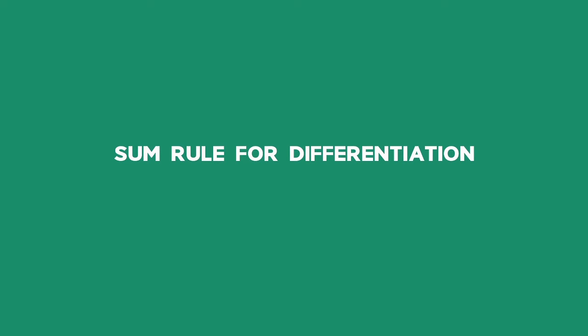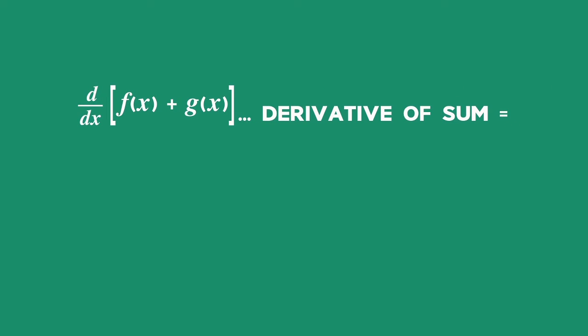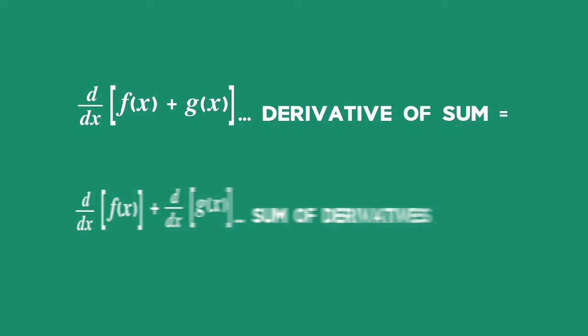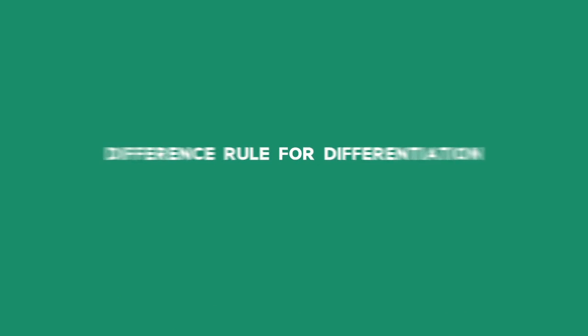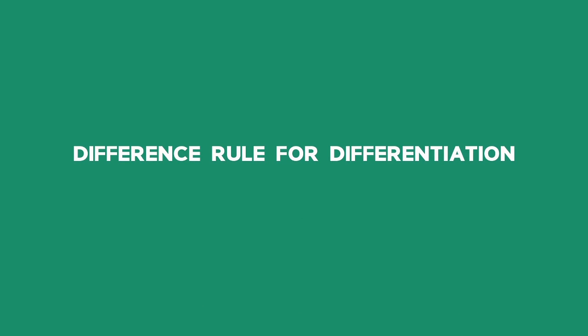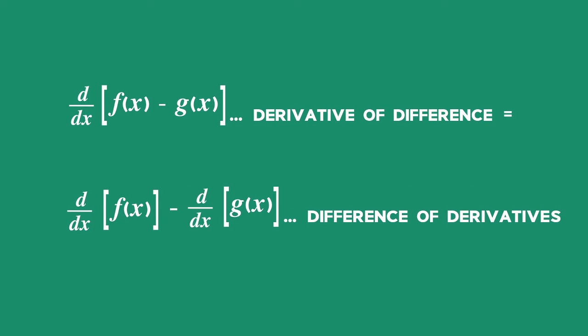Sum Rule: The derivative of the sum of two functions is the sum of the derivatives of the two functions. Difference Rule: The derivative of the difference of two functions is the difference of the derivatives of the two functions.